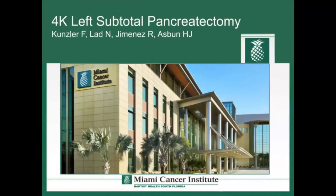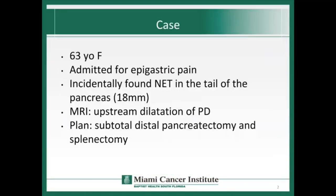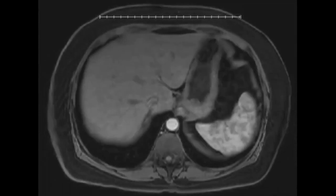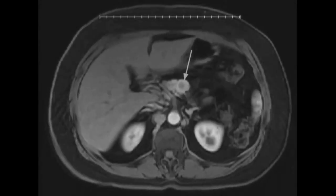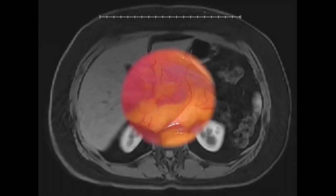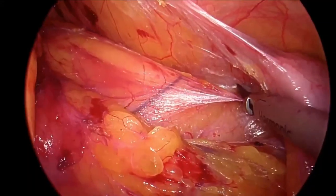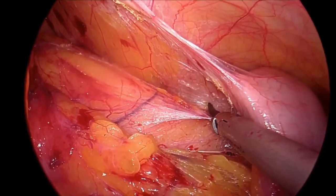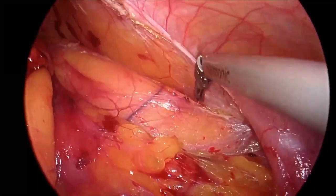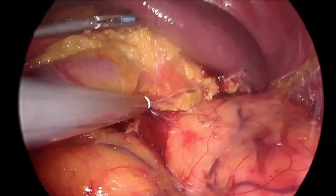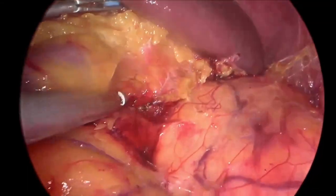We will now show a left subtotal pancreatectomy, also performed with 4K technology. The patient is a 63-year-old female with an incidentally found neuroendocrine tumor in the tail of the pancreas. The lesion caused dilatation of the pancreatic duct distally, clearly demonstrated on MRI. The procedure is started by mobilization of the colon. The patient has been placed in a modified right lateral decubitus position and a clockwise technique is used. The colon is mobilized first to aid retraction of the organs by gravity. The spleen is exposed and the dissection is carried from cauda to cephala.